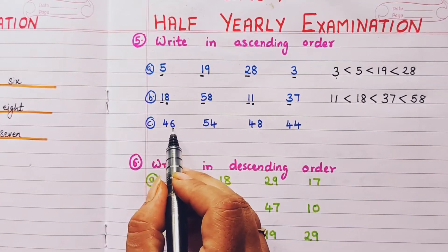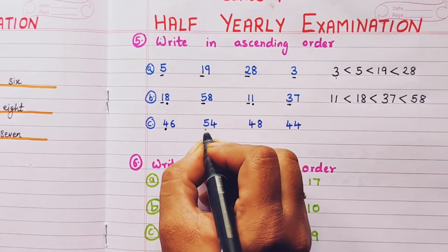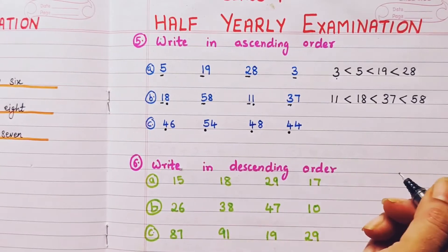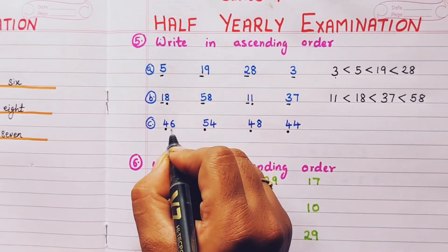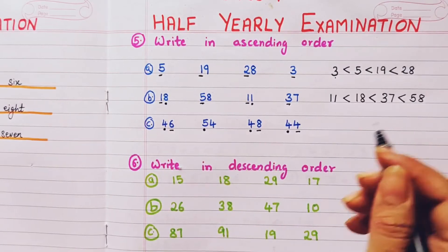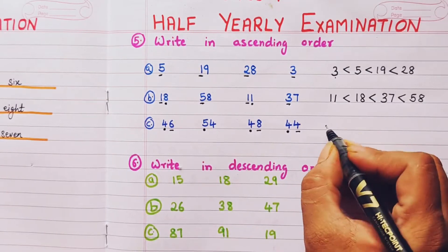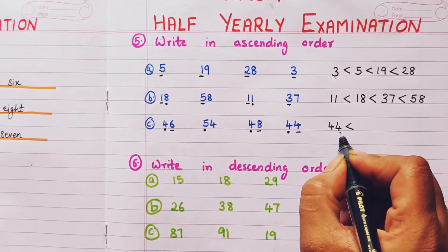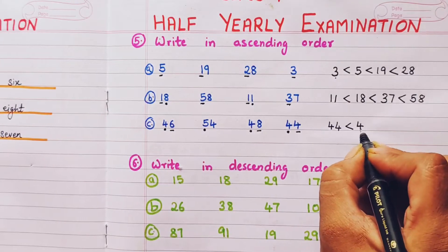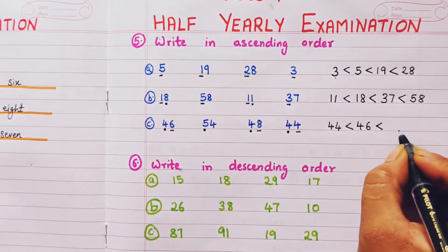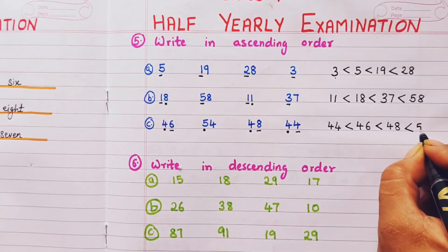Next set: 46, 54, 48, and 44. Tens digits: 4, 5, 4, 4. Three numbers have 4 in tens place — compare ones: 6, 8, and 4. The smallest is 4, so 44 comes first, then 46, then 48. Then comes 54 since it has 5 in tens place. Ascending order: 44, 46, 48, 54.